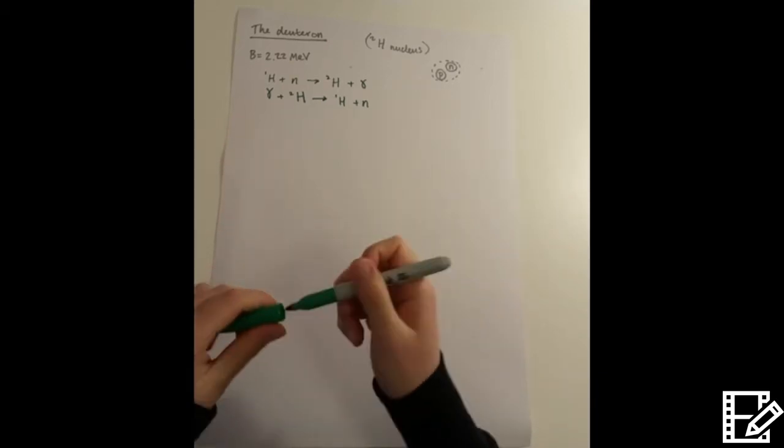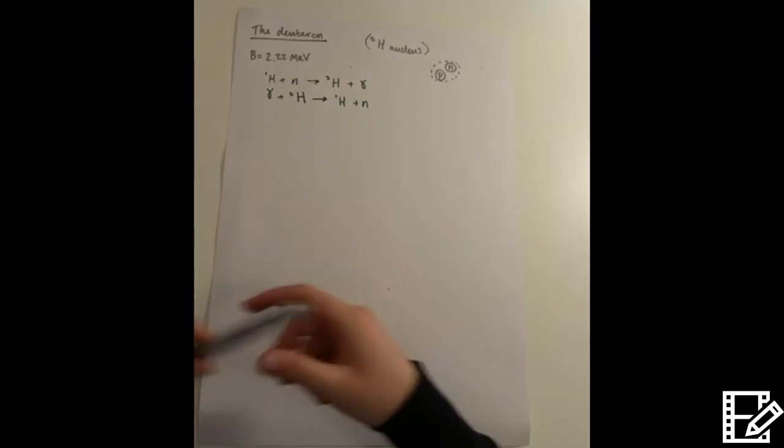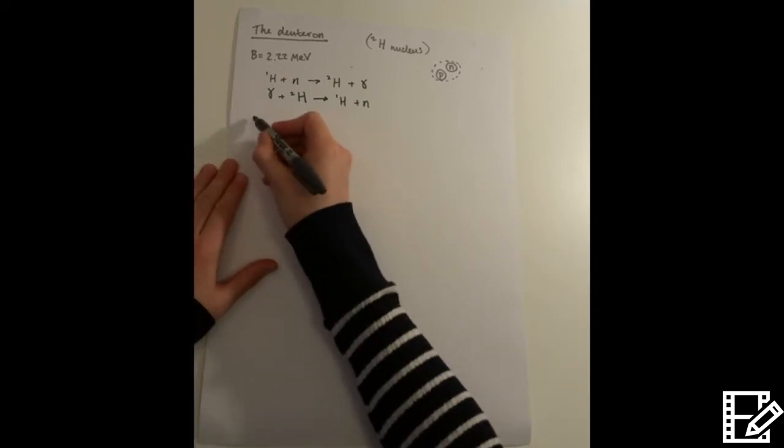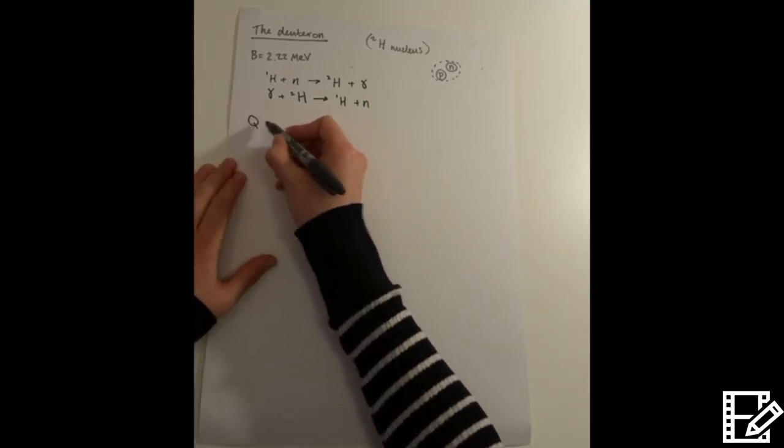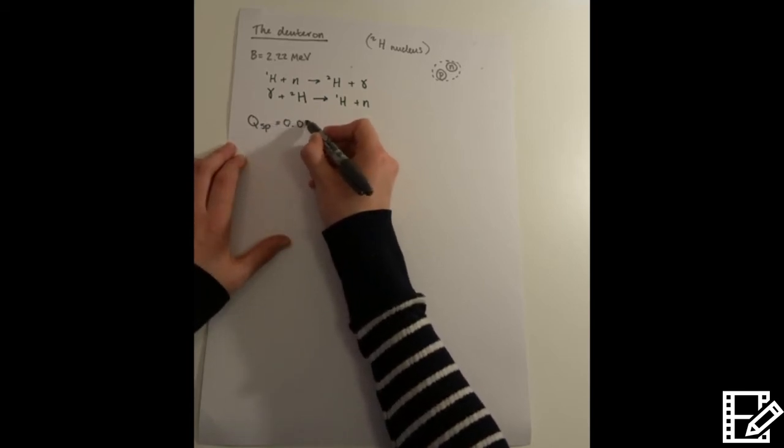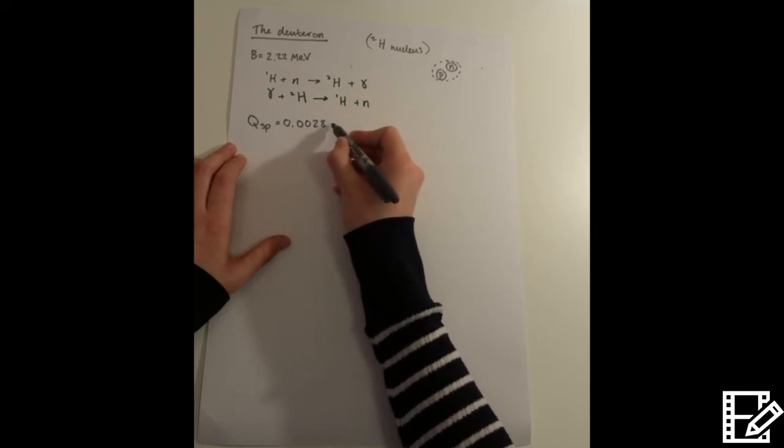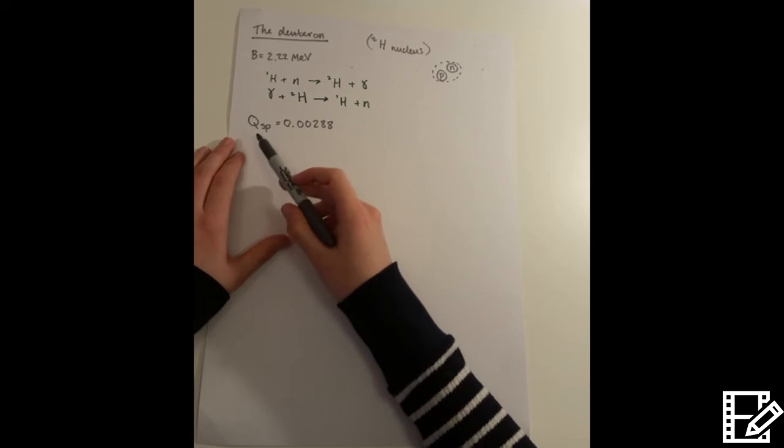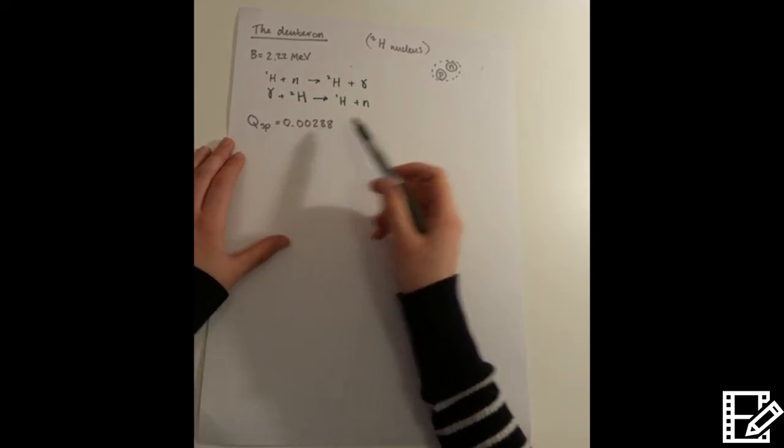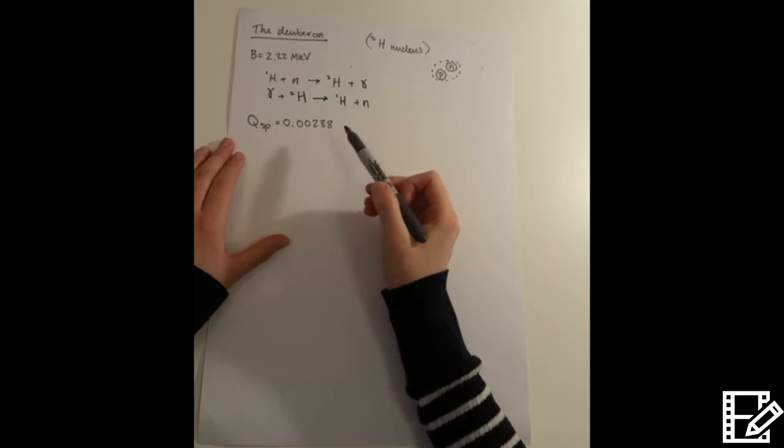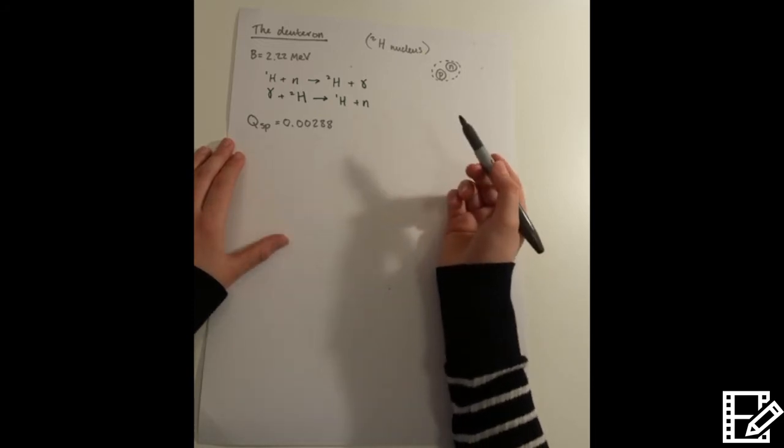We also know that the deuteron has an electric quadrupole moment, which is non-zero. It's a small value. And this is essentially saying that actually our deuteron nucleus is not quite spherical. It has a little bit of a deformed shape.